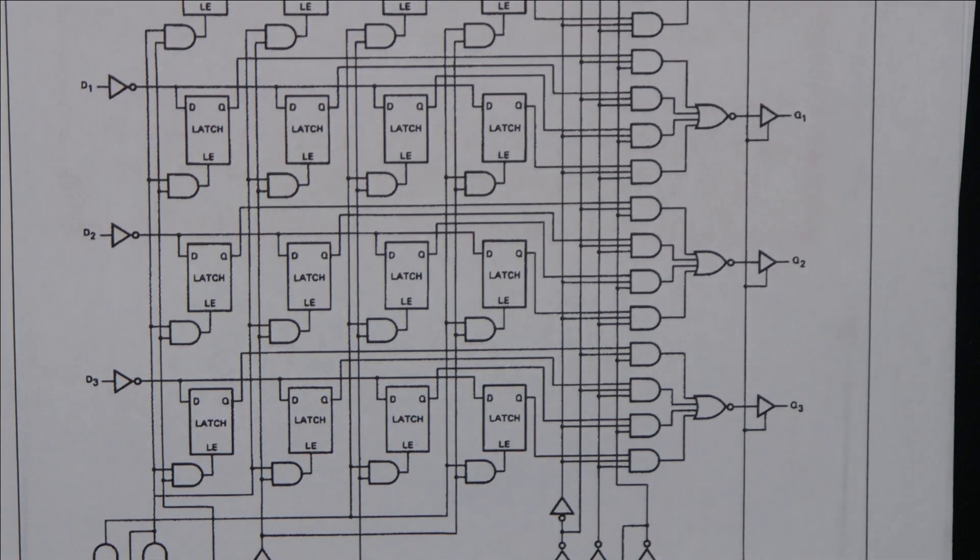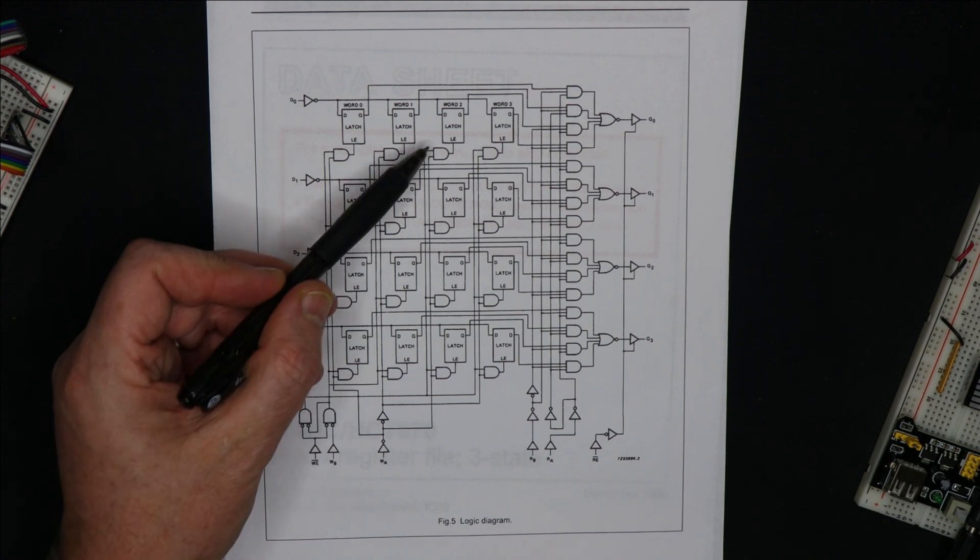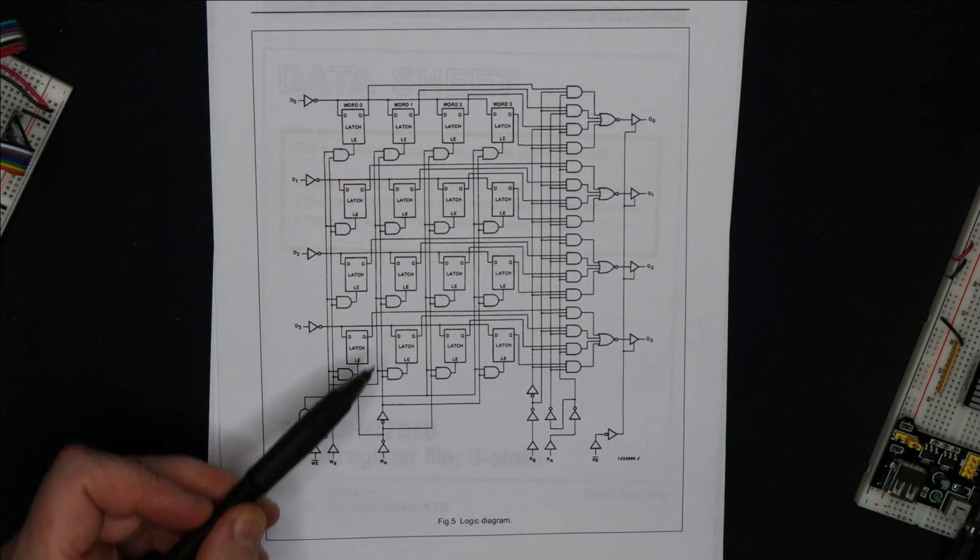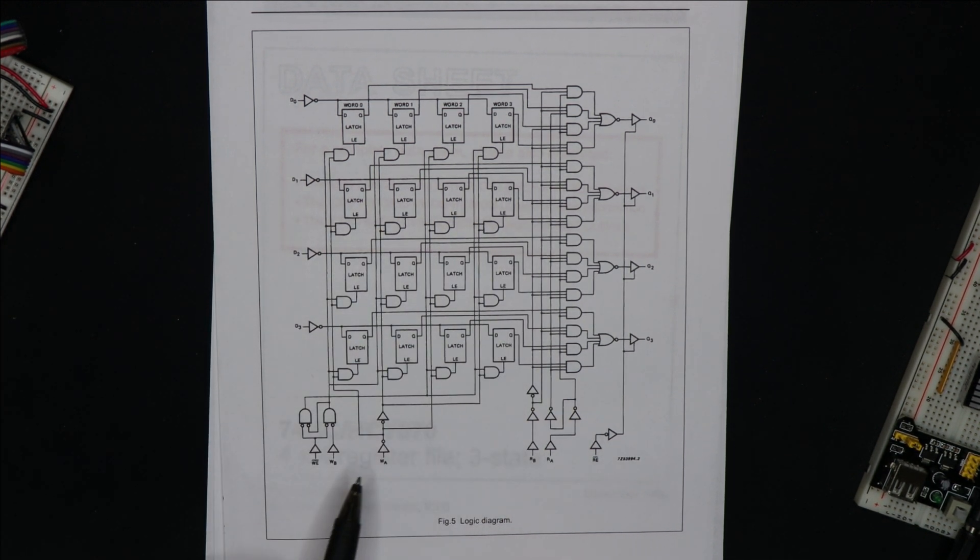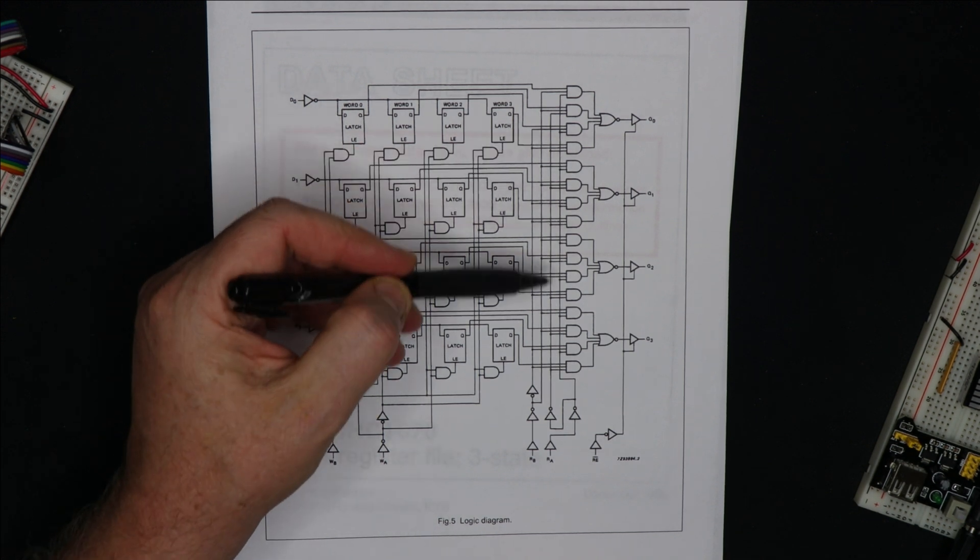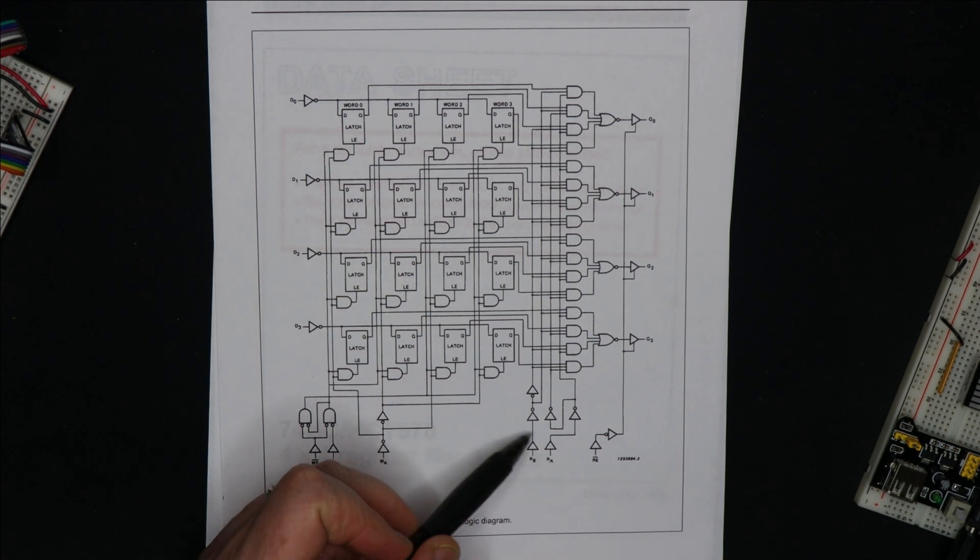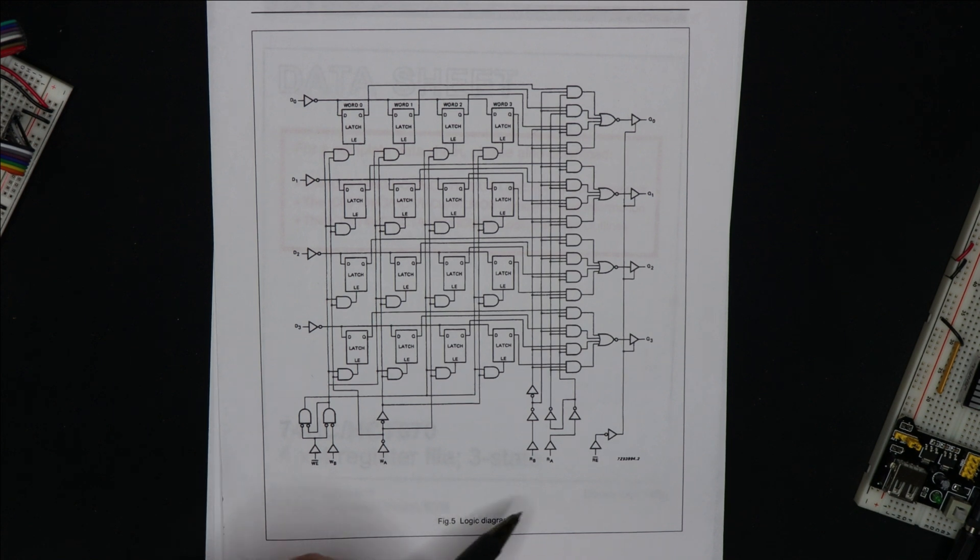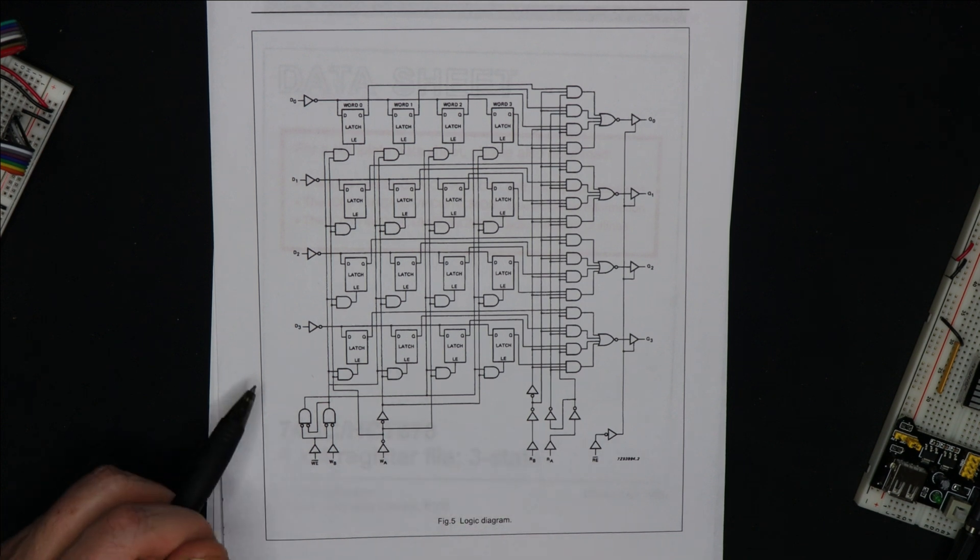Let's zoom out. So this is what's inside. There's 16 latches arranged in banks of four, one for each of the possible write addresses. There's complicated logic here on the output to select which latch is going to get read, and then there's the tri-state, which is driven off the read enable bit.